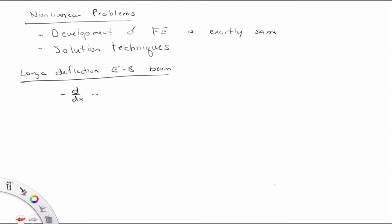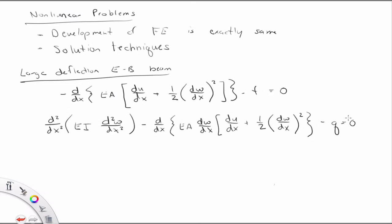And so the equation, the strong form equation for that. Here we have a beam that has some axial motion U and transverse motion W. Q0 would be a distributed load in the transverse direction and F is an axial load.